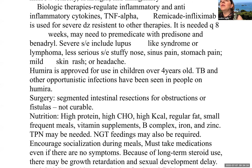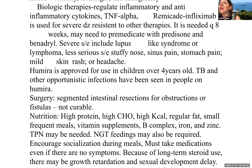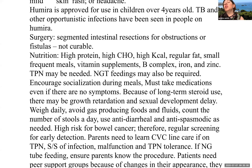Biological therapies regulate inflammatory and anti-inflammatory cytokines. TNF-alpha inhibitor Remicade (infliximab) is used for severe disease resistant to other therapies, needed every eight weeks — you may need to pre-medicate with prednisone or Benadryl. Severe side effects include lupus-like syndrome and lymphoma; less serious side effects include stuffy nose, sinus pain, stomach pain, mild rash, and headache. Humira is approved for children over four years of age; TB and other opportunistic infections have been seen in people on Humira.